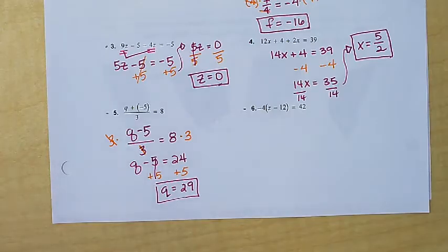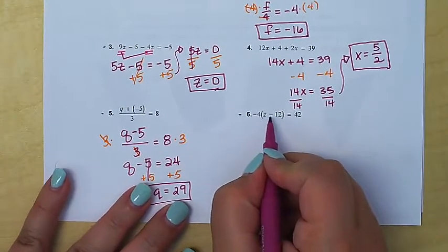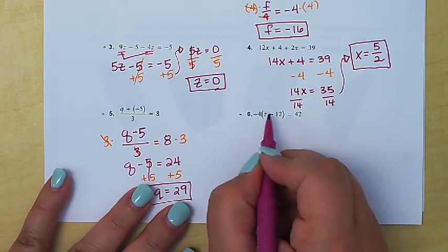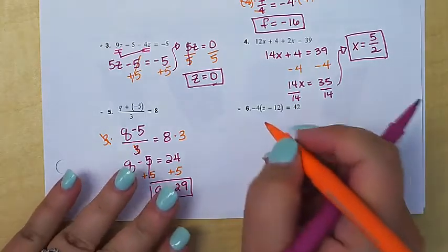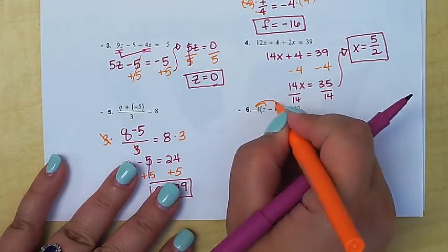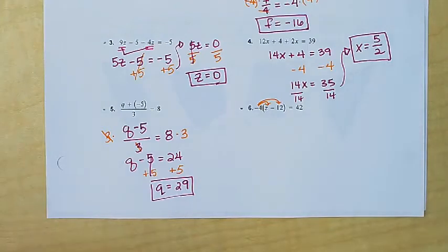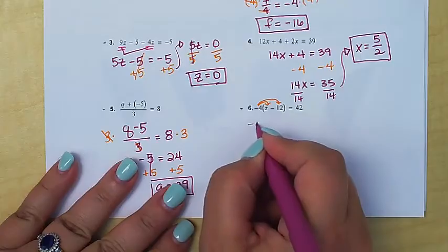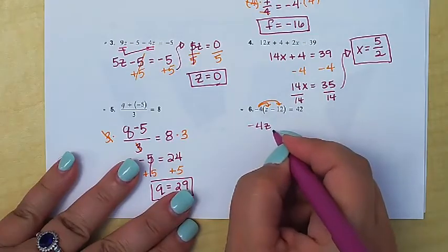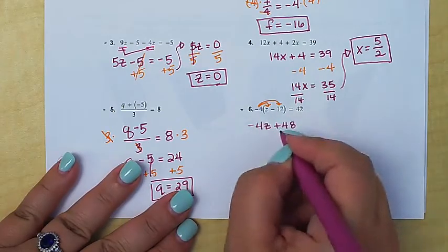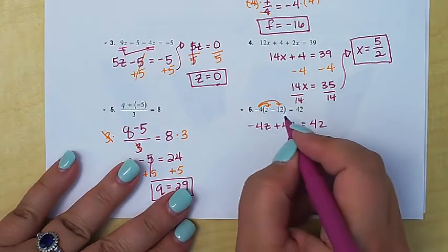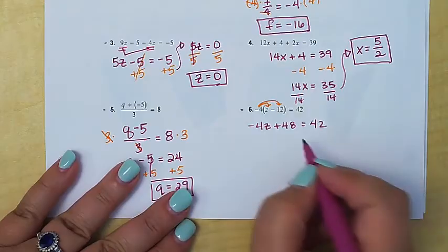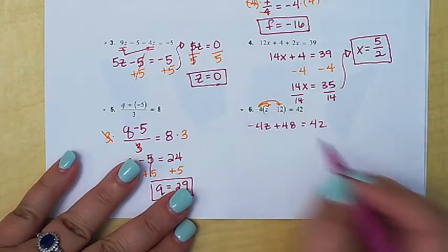Let's try number six. Number six has a good example of a parentheses whose purpose is distribution. We can see here that there's a parentheses, but not because I can do the math inside first. I really can't do this. As long as I don't know what z is, I really can't do the subtraction without knowing that number. This parentheses has a different purpose. It has a purpose of telling me that they want me to multiply negative four, not just by what's next to it, but by both. That's that distributive property. We want to make sure we distribute that in. We'll want to do that before we proceed. Negative four times z is negative four z. Negative four times negative 12 is a positive 48. Negative times negative is a positive. That's equal to 42.